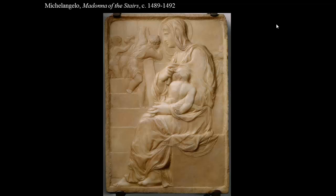I wanted to show you one of his early works from when he's living in the Medici household. The Madonna of the Stairs, done between 1489 and 1492, would have been done when Michelangelo was between 14 and 16 years old, and from a very early age he displays his facility with sculpture. This is a relief sculpture — quite low relief — where he cut into the stone around the figures. The Christ child and the Virgin's hand come out the most from the background, while figures recede into even lower relief. You can see his strong interest in dynamic figures and beautiful rendering of drapery and the body beneath it.